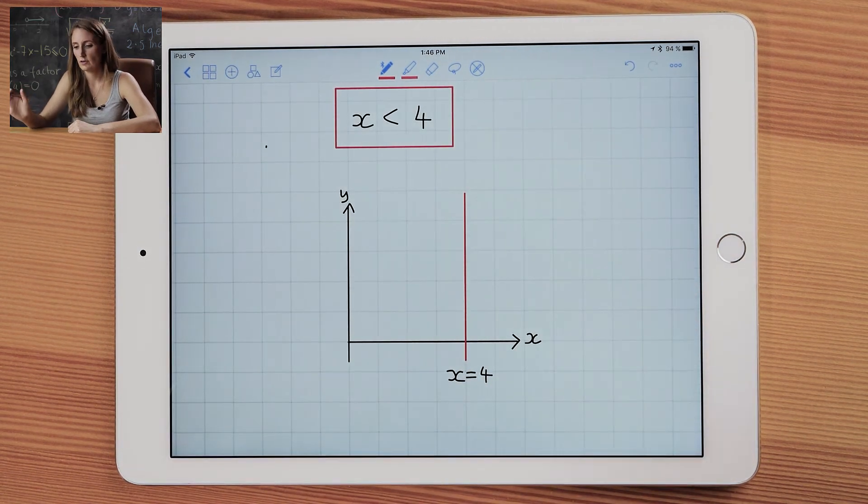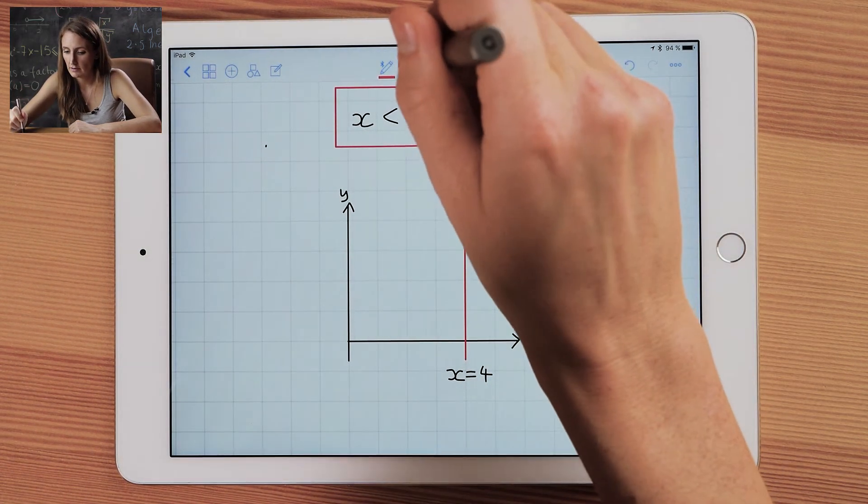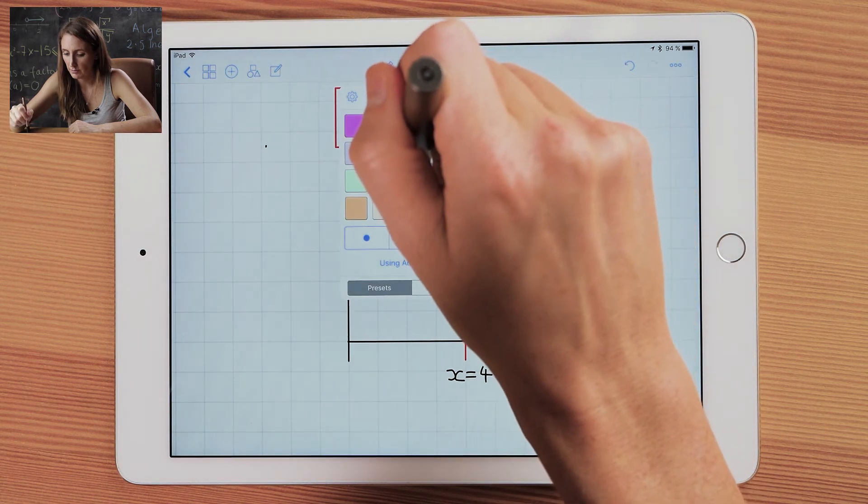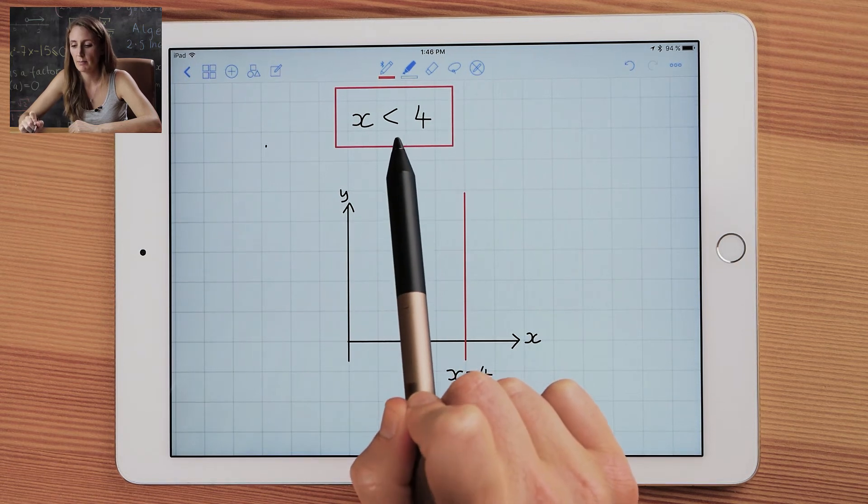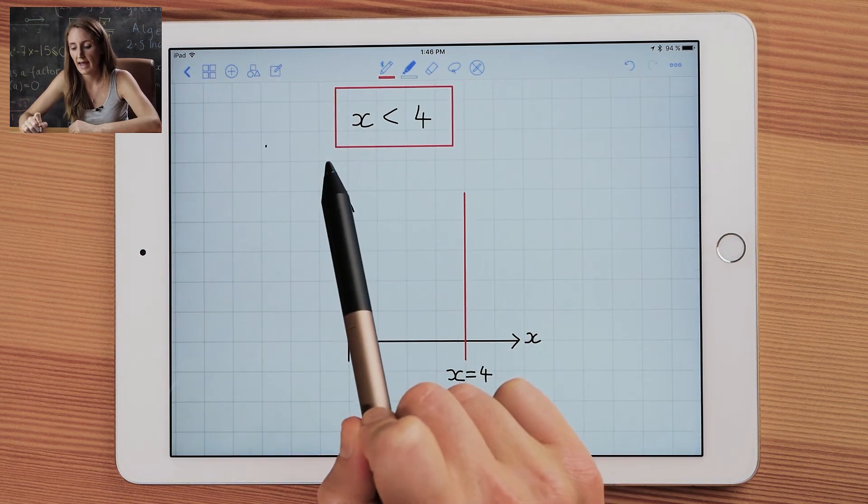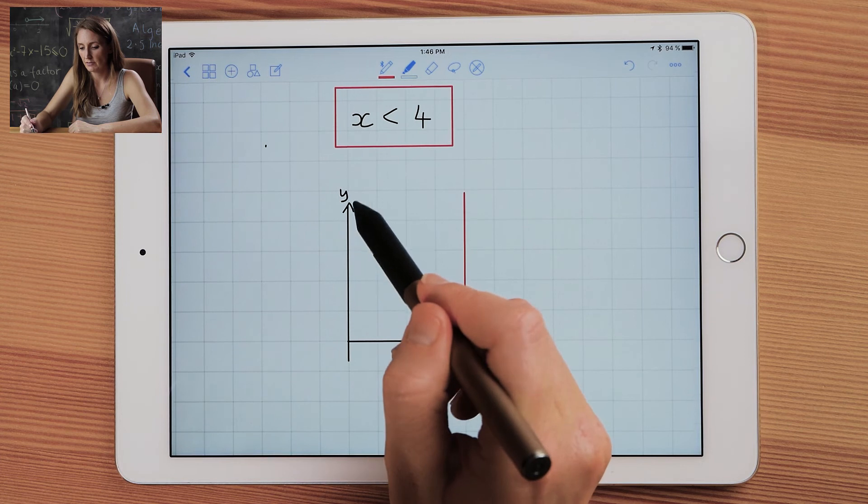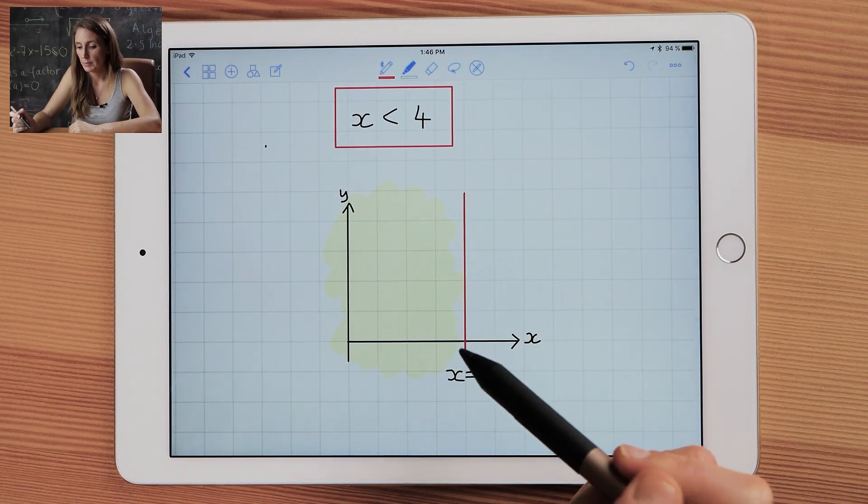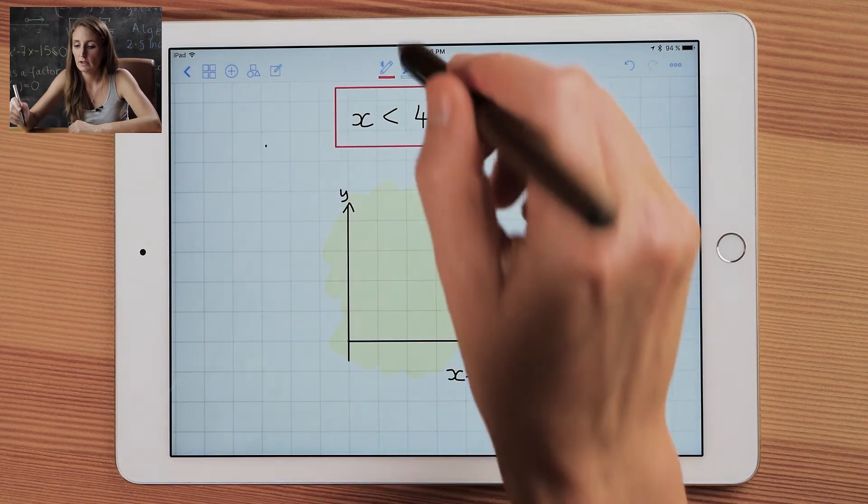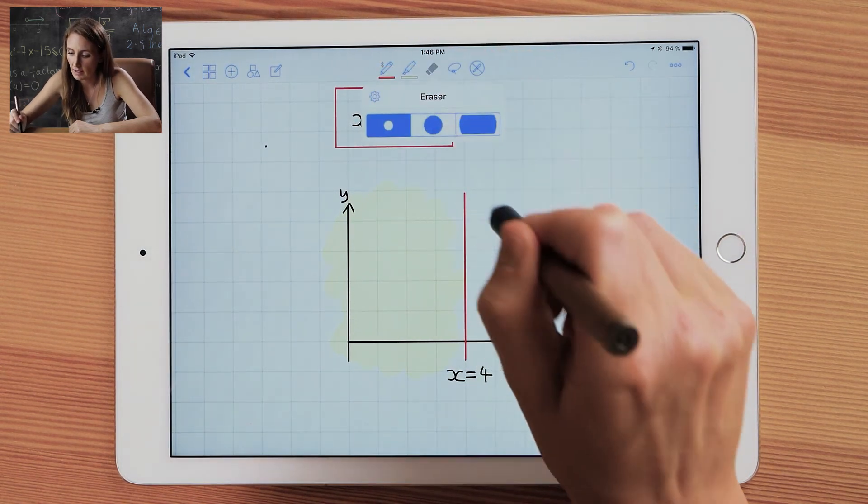Often you're asked to shade regions with inequality. So if you take a different color or cross-hatching if you prefer, we've been asked to shade the region x is less than 4. I want you to remember less than to the left. So we want to shade to the left of this line here. So we're going to shade all of this space here. Because it's less than and not less than or equal to, we're going to make it a dotted line.